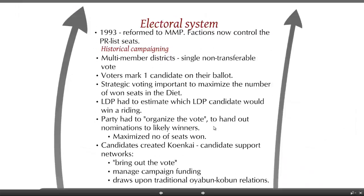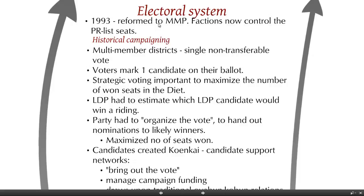The electoral system is actually quite different. In 1993, Japan reformed to a mixed-member plurality system — the same electoral system as in Germany — where different political party factions control the lists of seats in the party lists. This reform took place against the backdrop of how campaigning was done in multi-member districts before the reform.